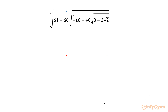Welcome back to Infigar, my dear friends. In this video we have another very interesting question from Radical Maps. We have to denest the 4th root of 61 minus 66 times the cube root of negative 16 plus 40 times square root of 3 minus 2 square root 2. Let us get started by considering this expression equal to E.